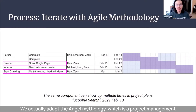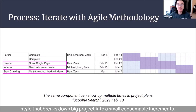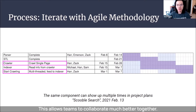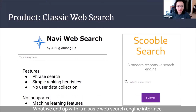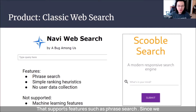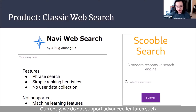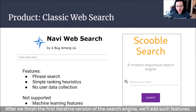Thank you, Destiny. We actually adopted the Agile methodology, a project management style that breaks down big projects into small consumable increments. This allows teams to collaborate much better together. What we ended up with is a basic web search interface that supports features such as free search. Since we value user privacy, we do not retain any user data at all. Currently, we do not support advanced features such as machine learning-assisted query completion, but after we finish the first iterative version we will add such features.